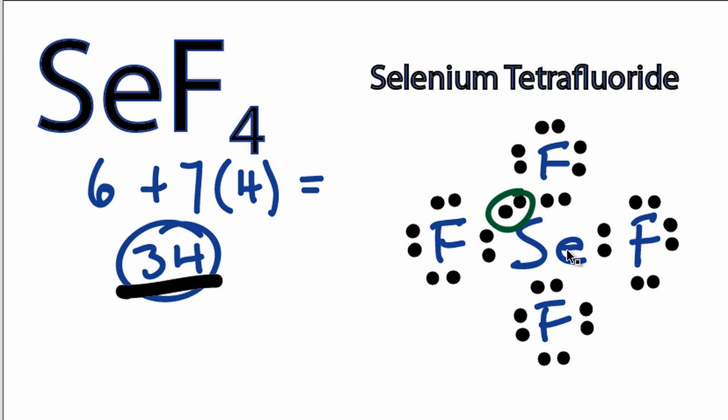We can clean that up a little bit, and we're done with the Lewis structure for SeF4. You could check the formal charges. If you did, you'd find out that there's 0 for each one of those elements there, making this the best Lewis structure for SeF4.